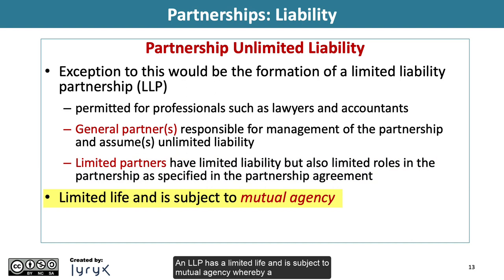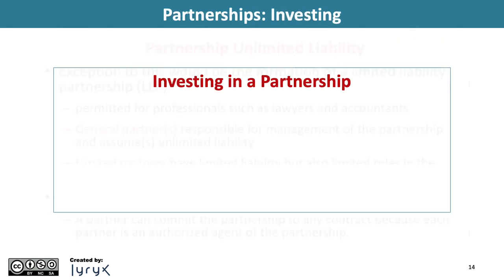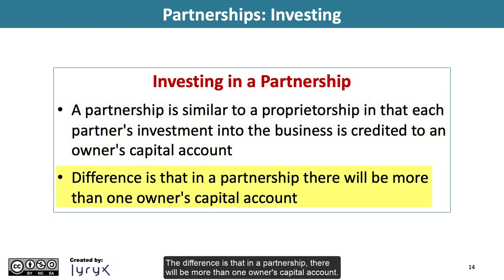An LLP has a limited life and is subject to mutual agency, whereby a partner can commit the partnership to any contract because each partner is an authorized agent of the partnership. A partnership is similar to a proprietorship in that each partner's investment into the business is credited to an owner's capital account. The difference is that in a partnership, there will be more than one owner's capital account.